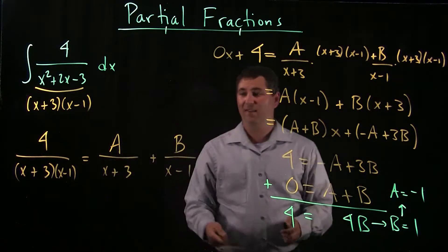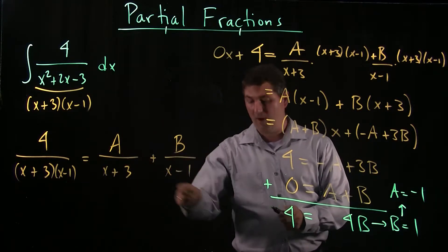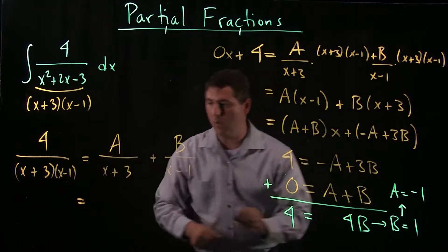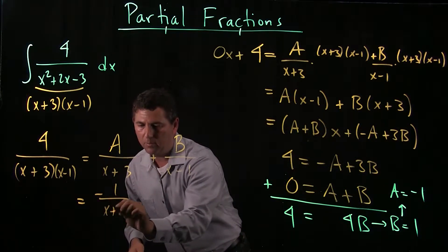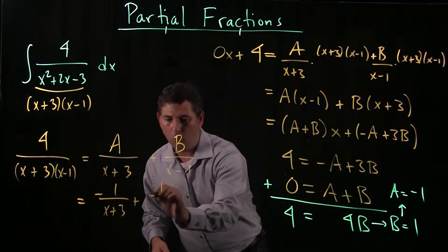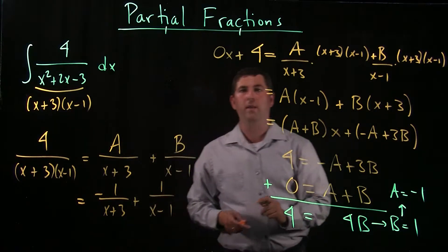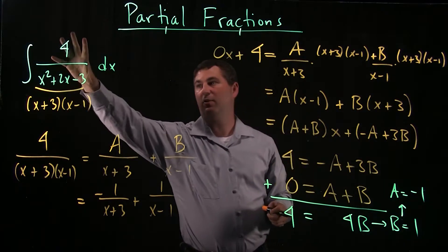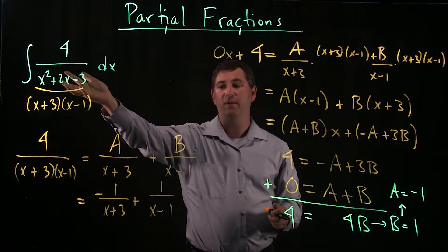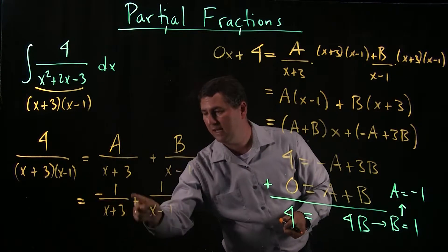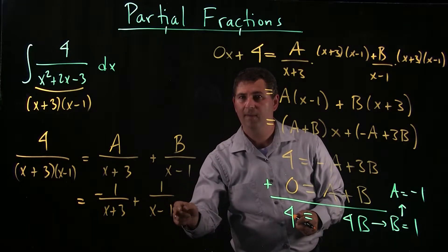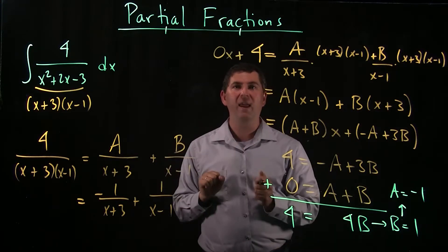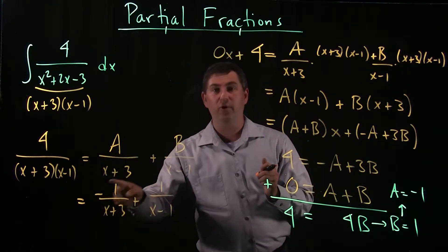And so that tells me that actually what I could do is go back and rewrite my fractions where a is negative 1. So negative 1 over x plus 3. And b is plus positive 1. So plus 1 over x minus 1. And so now if I want to compute this antiderivative, instead of computing it of this fairly complicated function, I can break this up and integrate each of these piece by piece. Okay, now before we do that, let's do a little cutaway and take a look at a more general version of this.